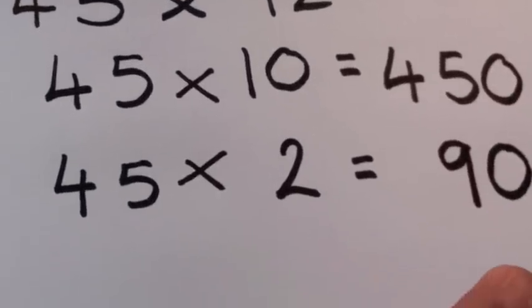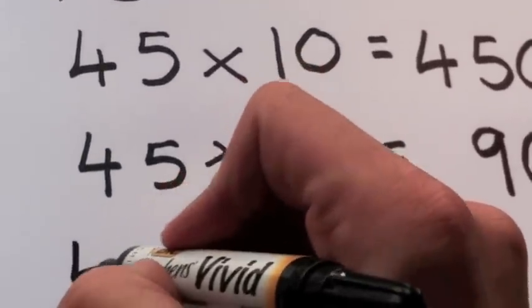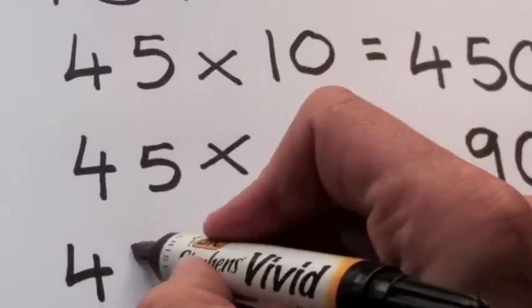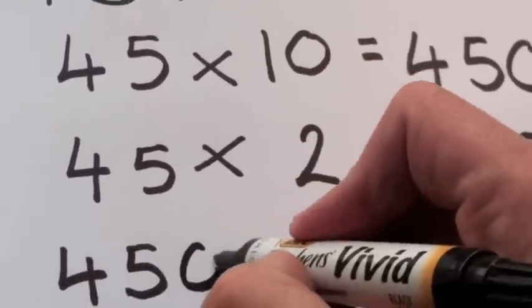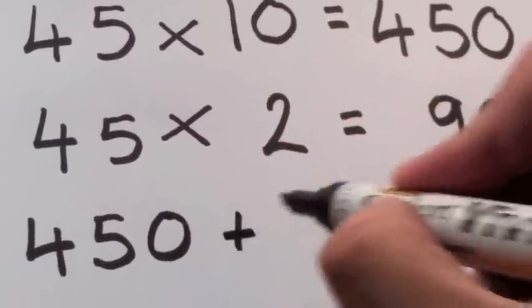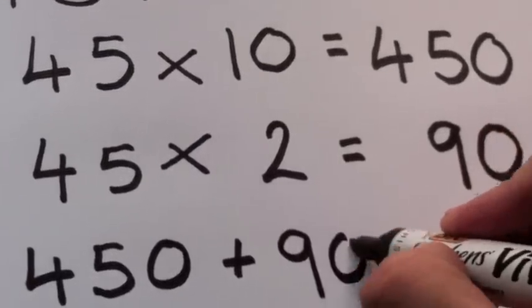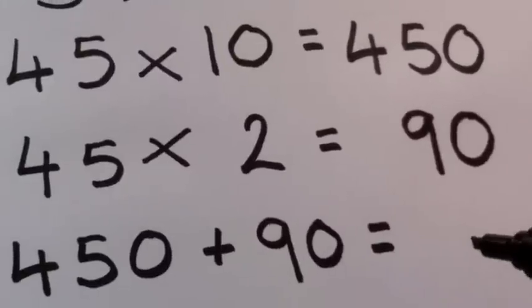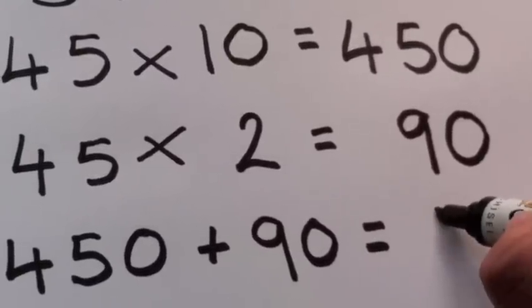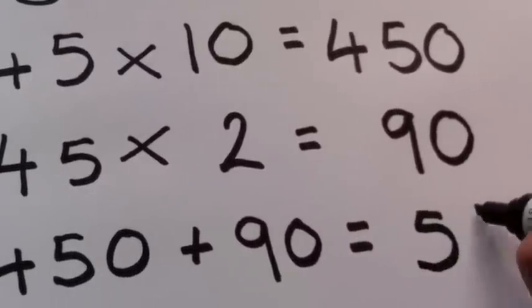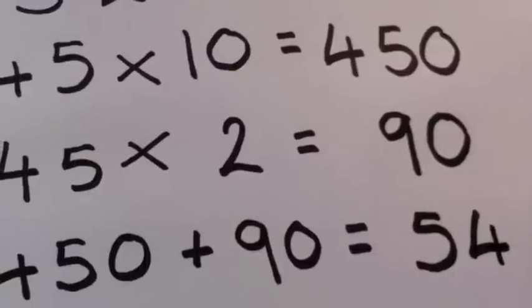add those two to get 90. All that's left to do is 450 plus 90, and you've got your answer of 500 and 40.